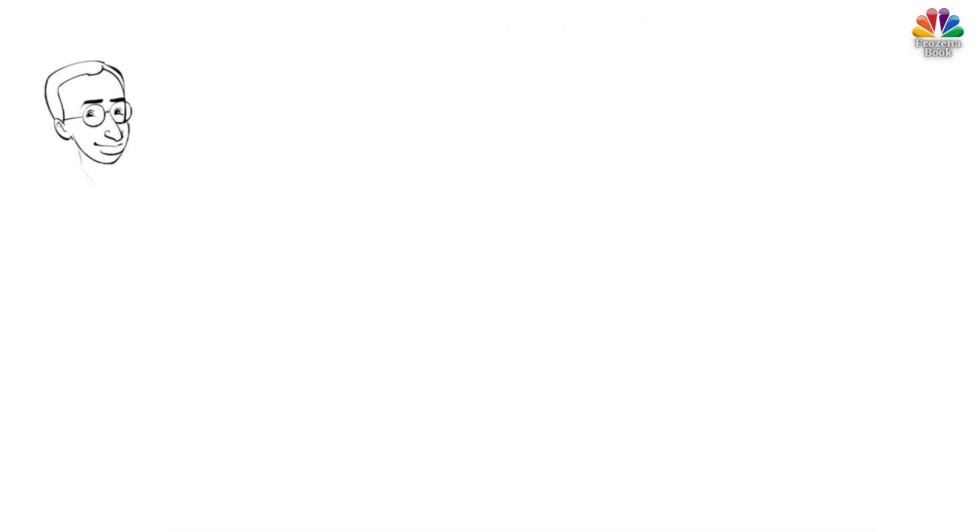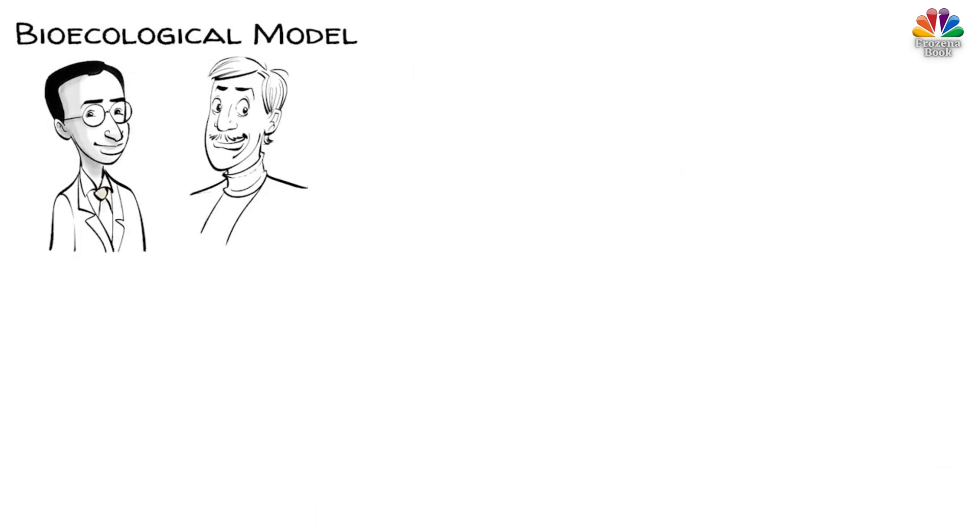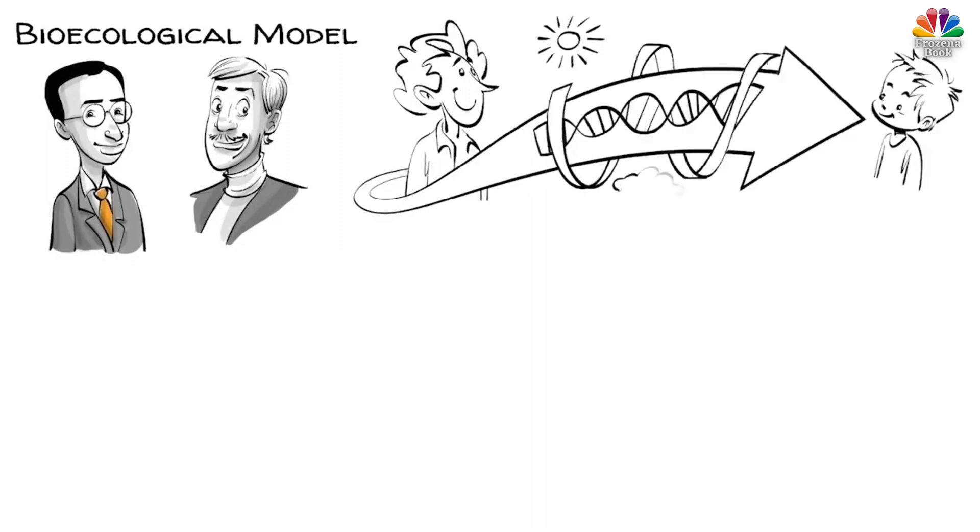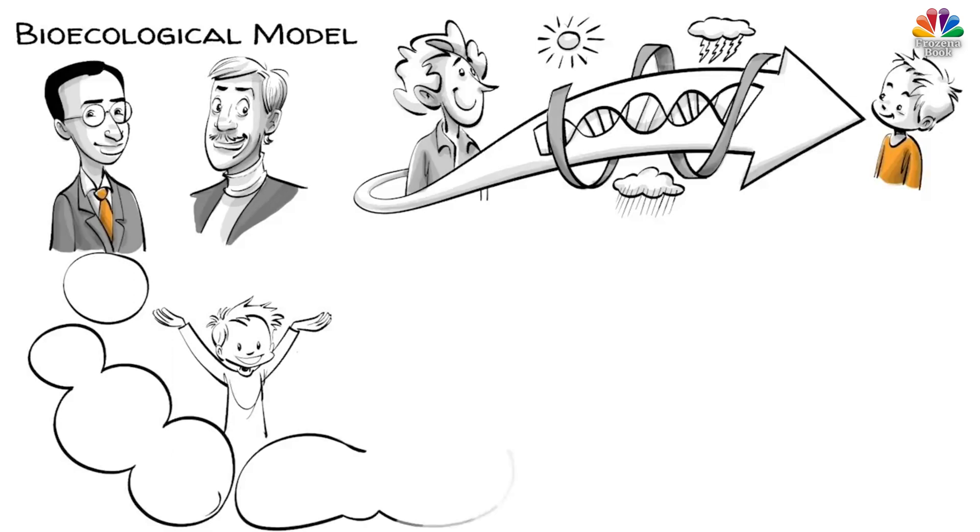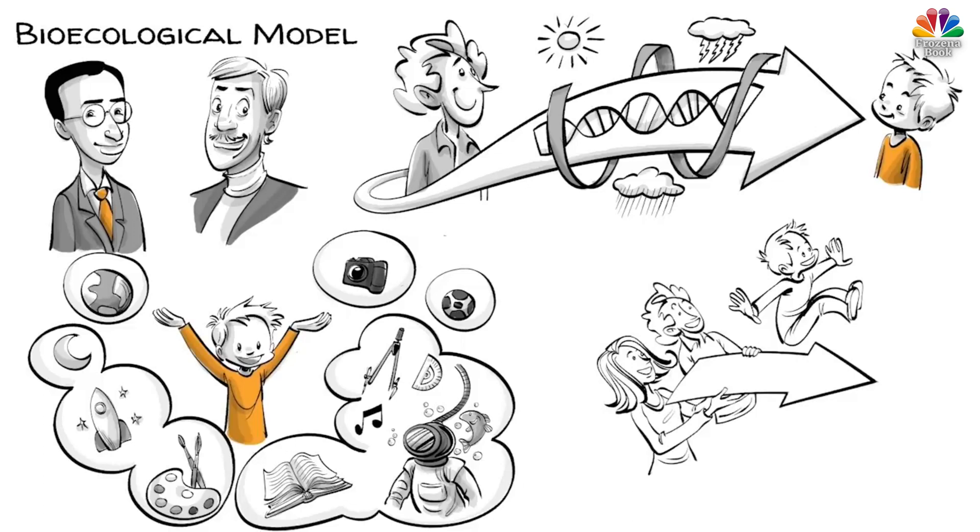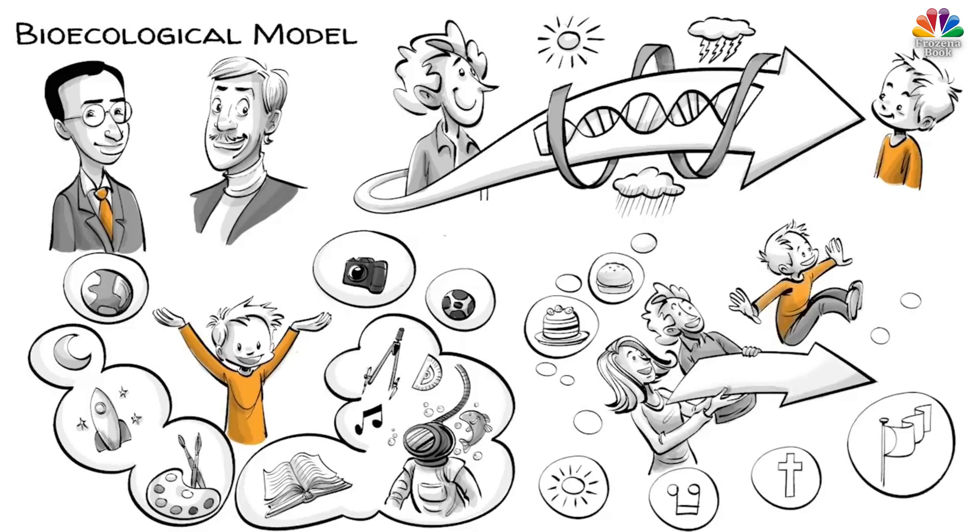Decades later, Bronfenbrenner and Stephen Sesse proposed an extension of this theory, called the Bioecological Model. This new model recognizes gene-environment interactions and acknowledges the role of heritability, but adds that genes themselves are under the influence of the environment. In other words, the process of heritability varies in a magnitude of potentials. How much a child can make of the potential they inherit depends on the ecological environment.